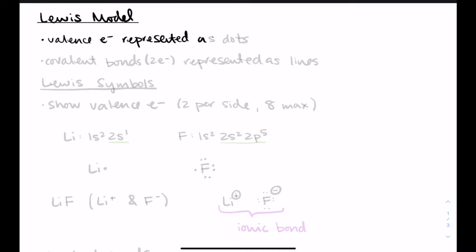In the Lewis model, we represent valence electrons as dots. When you have a covalent bond — a bond is two electrons — and if it's covalent, it's shared between two atoms, we represent it as a line. We'll also get into multiple bonds, which get represented as multiple lines.